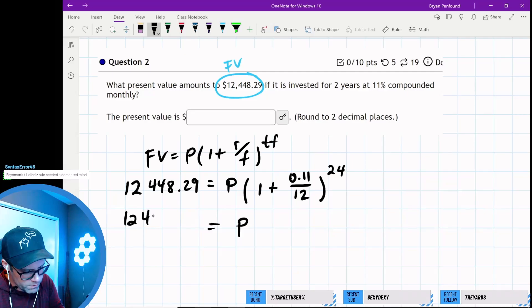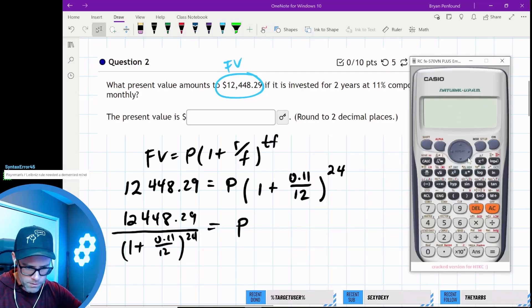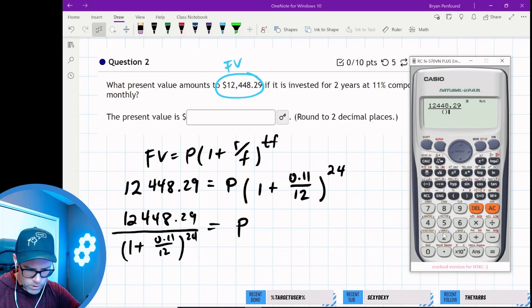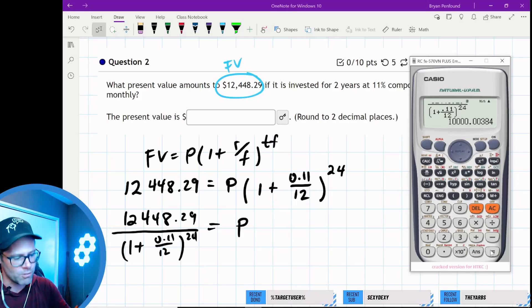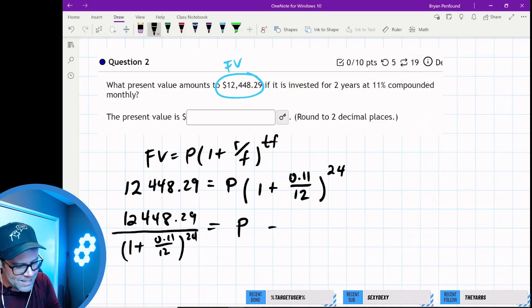P is going to be $12,448.29 divided by (1 + 0.11/12) to the power of 24. Let's set up this fraction: 12448.29 in the numerator, and in the denominator 1 plus 11% divided by 12, to the 24th power. The present value is pretty much $10,000—that's how you know you've done the question right.